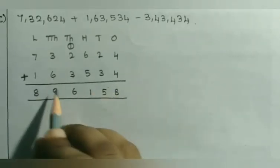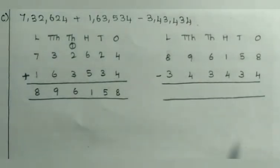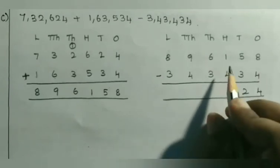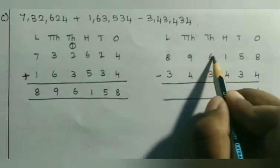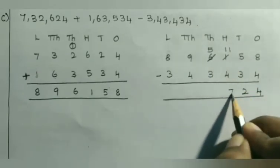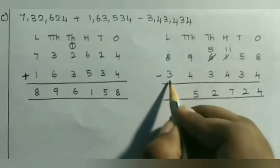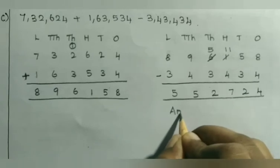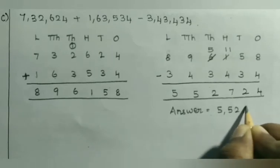Now we have to write this sum first and 3,43,434 second and find the difference. Subtracting from the 1's position: 8 minus 4 is 4, 5 minus 3 is 2. 1 minus 4 — 1 is smaller, so let us borrow from the thousands place; 6 becomes 5 and 1 becomes 11; 11 minus 4 is 7. 5 minus 3 is 2. 9 minus 4 is 5. 8 minus 3 is 5. So the answer is 5,52,724.